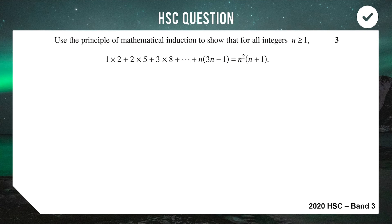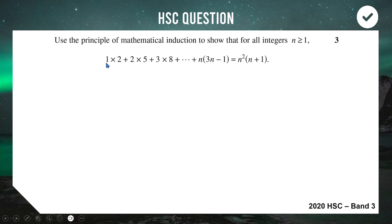Finishing off with an HSC question from 2020 — it's a Band 3, so it's not meant to be super strenuous. It's always easy to get at least a mark or two in induction because the first two steps are easy; it's only the third step where it can start to ruin your life. Let's dive right in — pause and have a go if you want, otherwise I'm doing it right now.